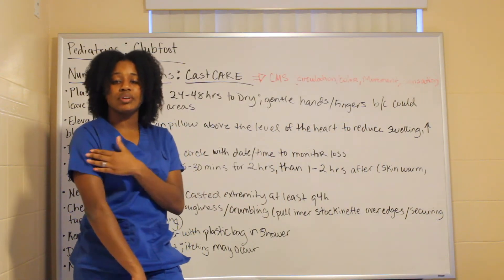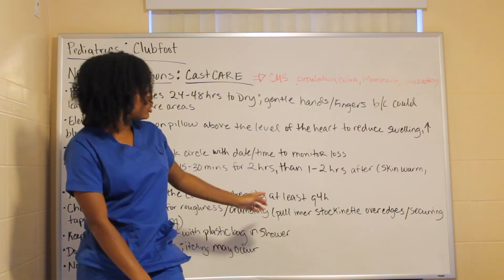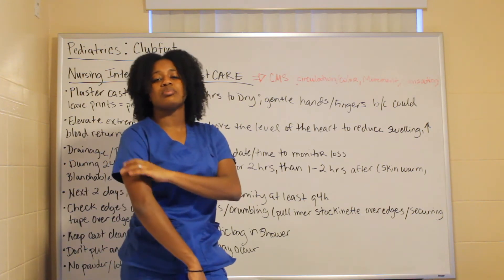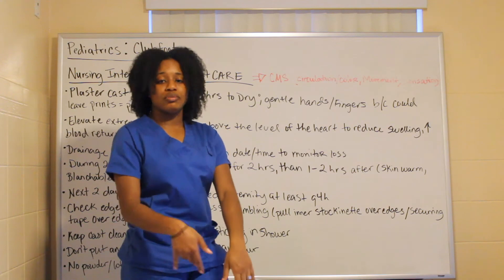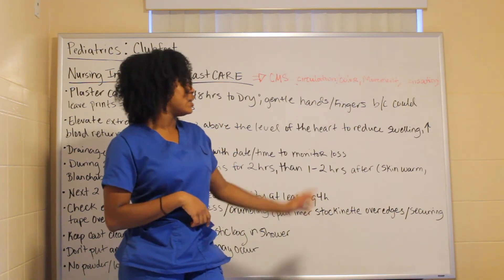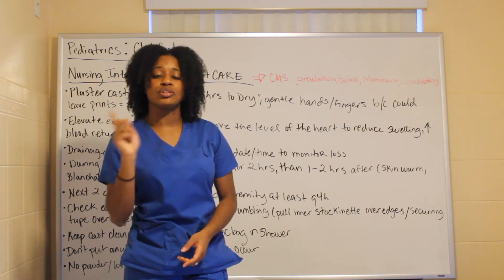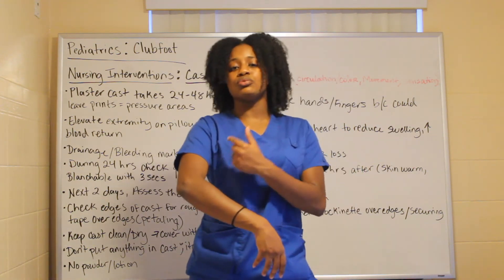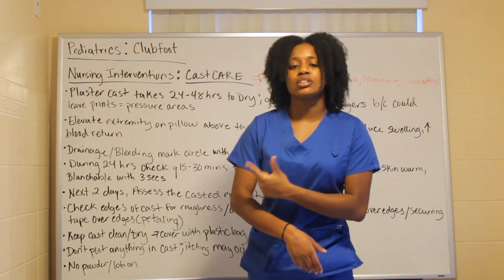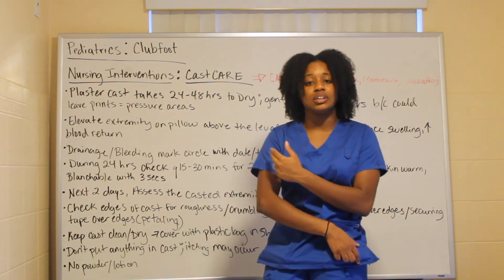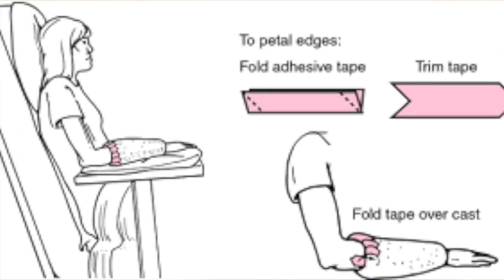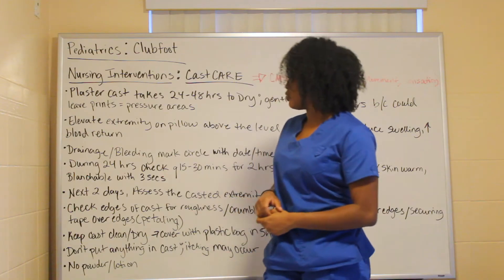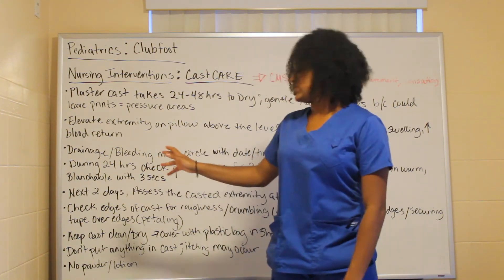Check the edges of the cast — they can have rough or crumbling edges that compromise skin integrity. Pull the inner stocking over the edges to protect the outer skin. Alternatively, you can tape the rough edges, which is called pedaling. If a test question asks what to do to prevent skin breakdown from crumbling cast edges, the answer is pedaling — taping the rough edges.